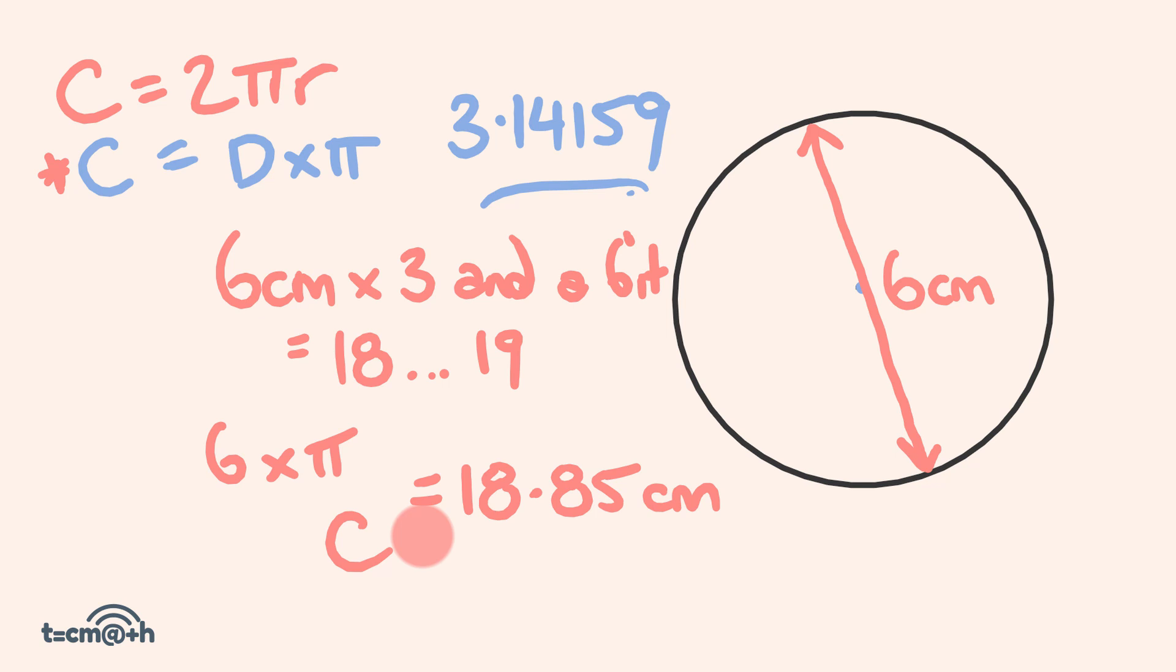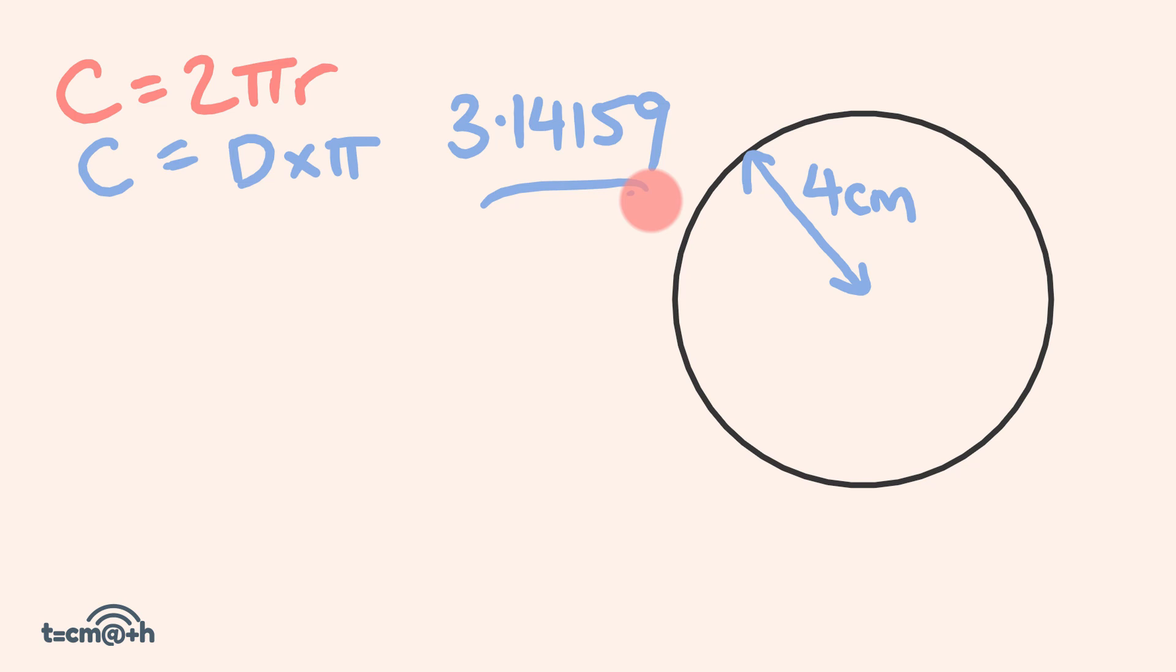What about we do another one? So for our second example, we have a circle whose radius is 4cm, and we're going to work out the circumference. To do this, I'm going to first work out the diameter, and then I'm going to go from there. I'm going to work out an estimation, and then I'm going to work out the exact amount.